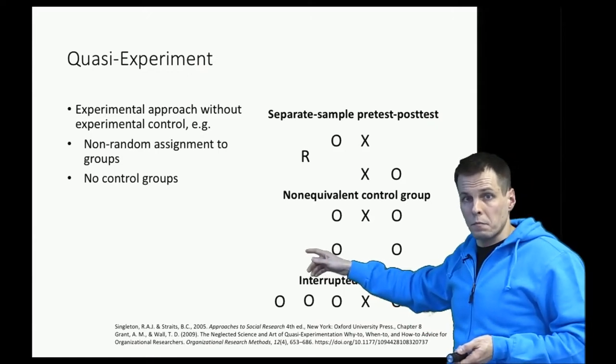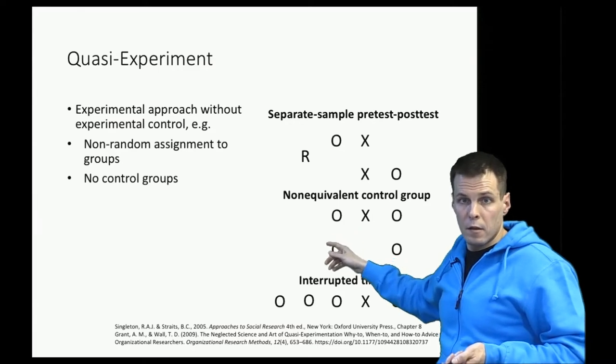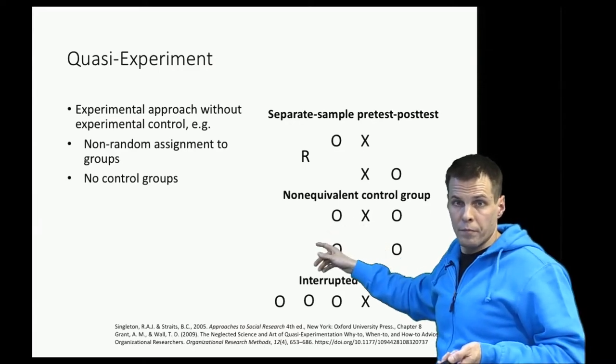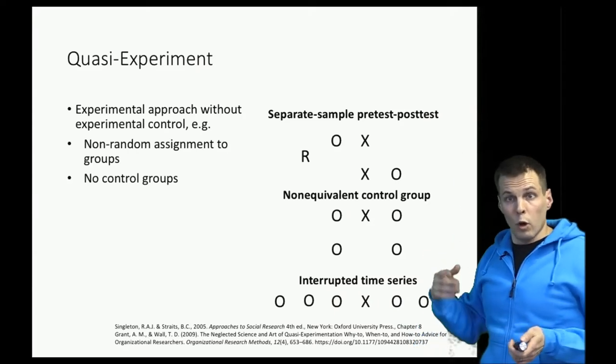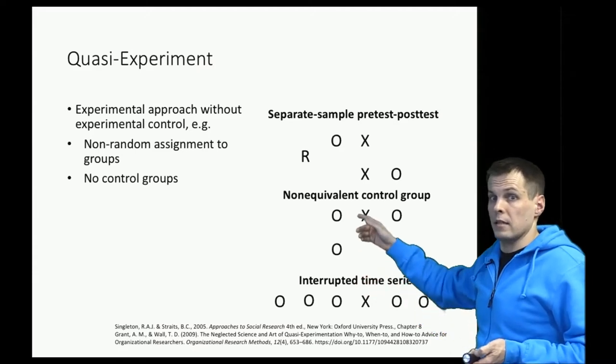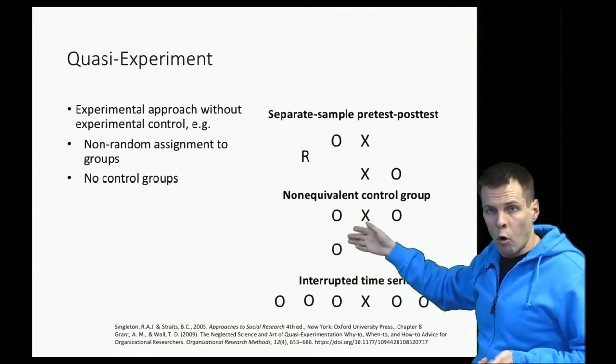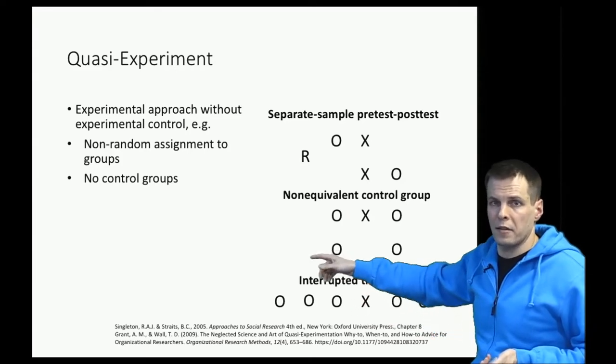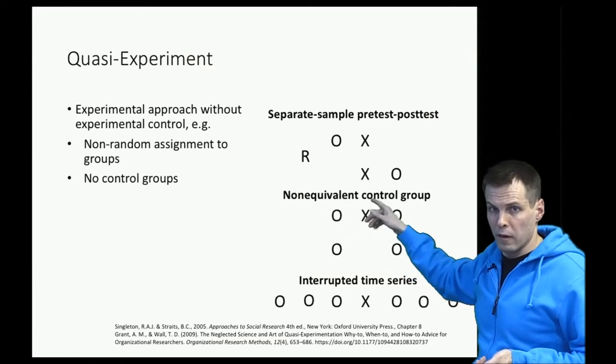We can also have experiments where the choice between our treatment and control is not random. Either it would look like random, we don't have control under the randomization, in which case we would assume that these samples behave as if they were random samples, or we can do some statistical adjustments for this non-random selection. So that's non-equivalent control group design.